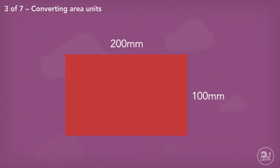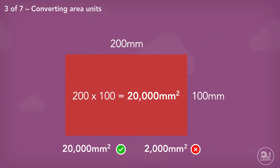Now to find the area, we multiply 100mm by 200mm, giving the area to be 20,000mm² instead of 2,000mm². This would be the correct conversion.